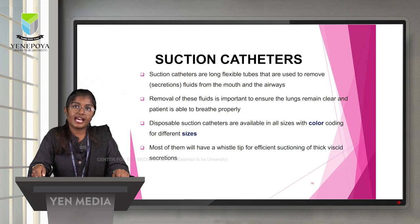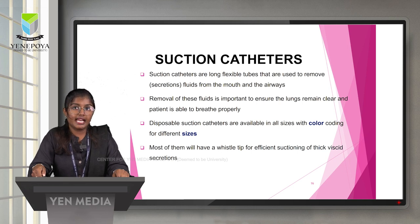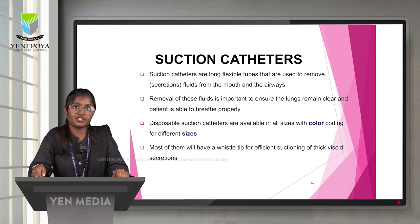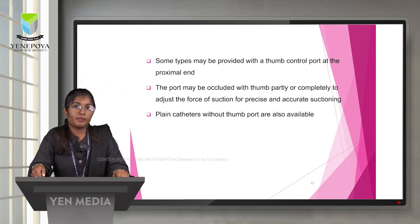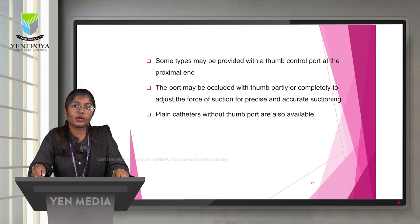Suction catheters are long flexible tubes used to remove secretions and fluids from the mouth and airways. Removal of these fluids is important to ensure the lungs remain clear and the patient is able to breathe properly. Disposable suction catheters are available in all sizes with color coding. Most have a versatile tip for efficient suctioning of thick viscous secretions. Some are provided with a thumb control port at the proximal end to adjust the force of suction partially or completely. Plain catheters without a thumb port are also available.